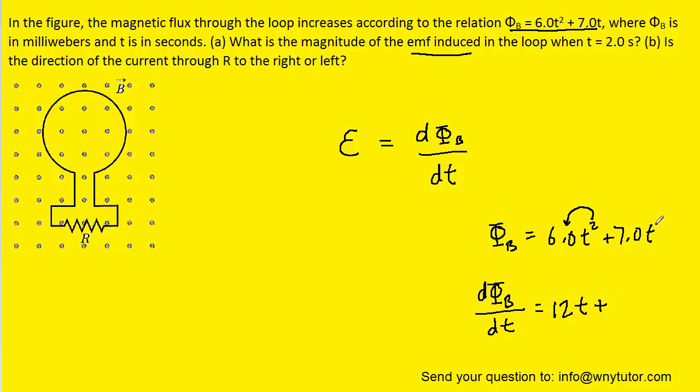And then in this case, the exponent is 1. So if we pull that exponent down and multiply by 7, we get 7. We have the variable t. We subtract 1 from the exponent to give us t to the 0. And of course, t to the 0 is equal to 1. So we can actually remove that from the derivative. So this expression right here is the derivative of the magnetic flux with respect to time. We're going to substitute it into our induced EMF equation.